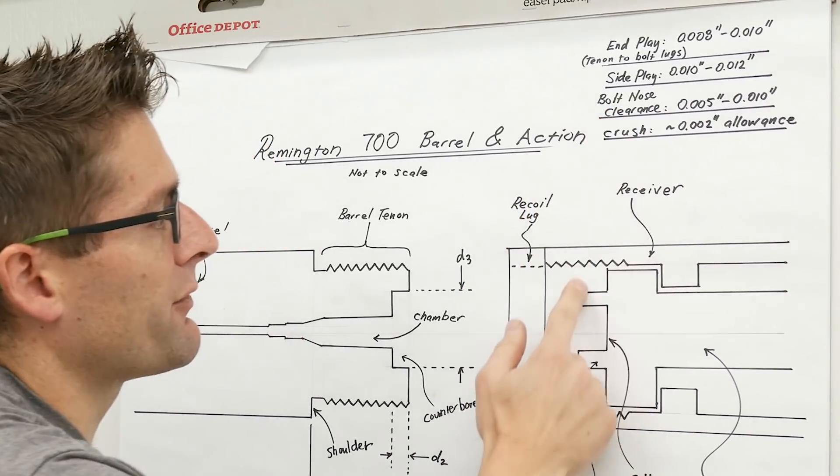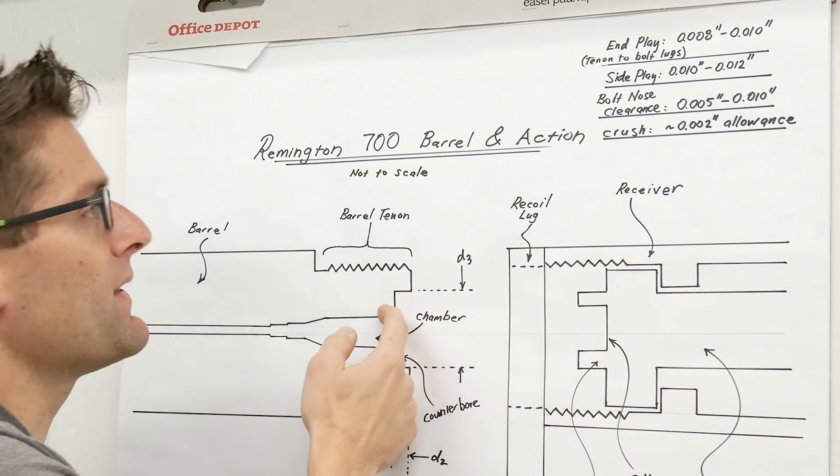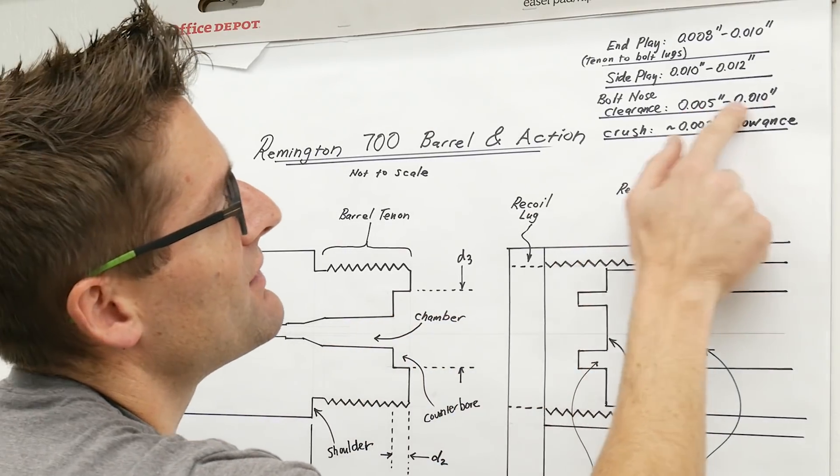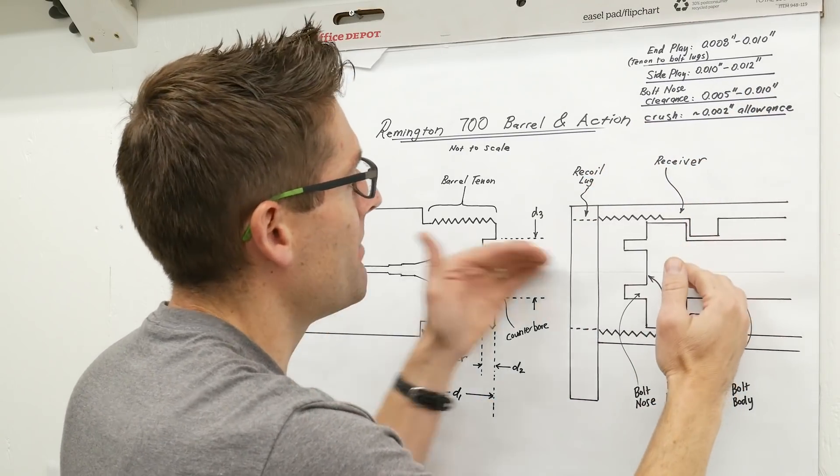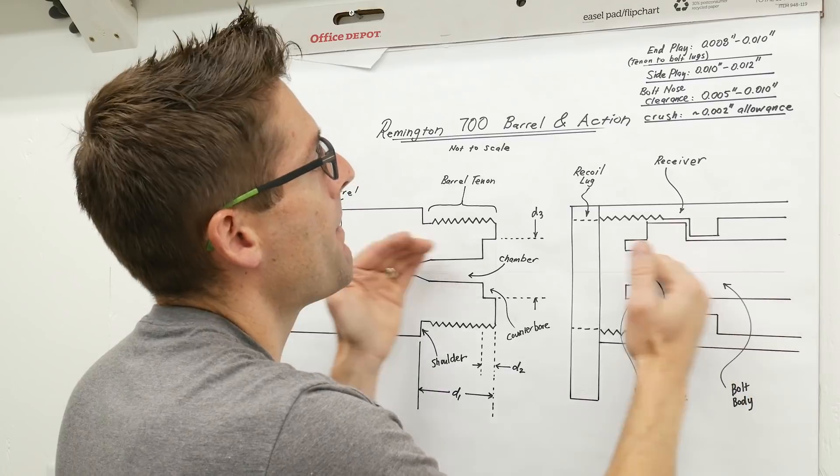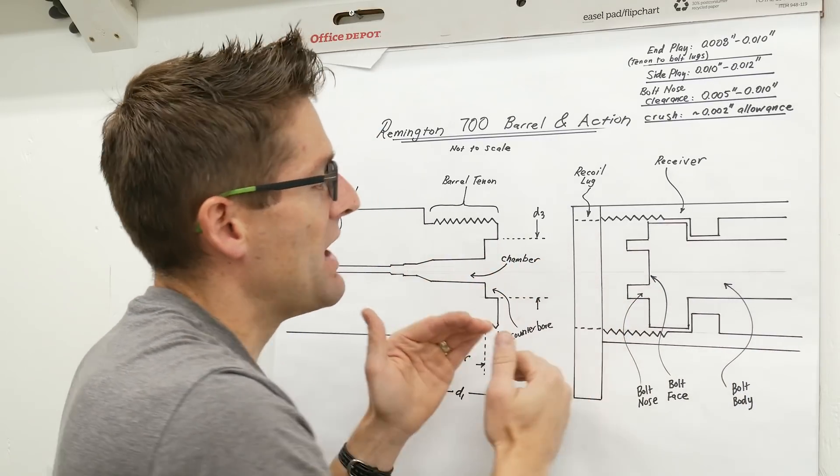Bolt nose clearance would be the front of the bolt nose to the depth of the counter bore, and I went with five to ten thousandths of an inch for that. And then again our crush allowance when we tighten the barrel into the receiver is going to be about two thousandths of an inch.